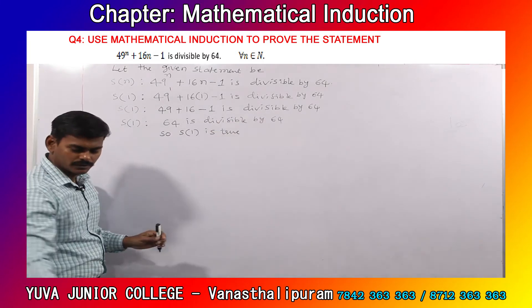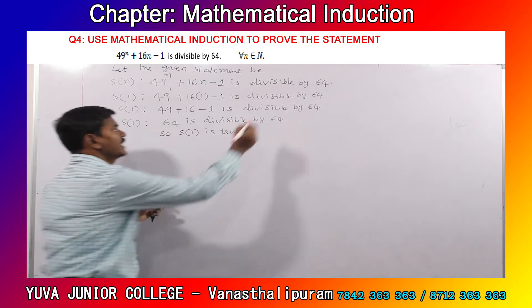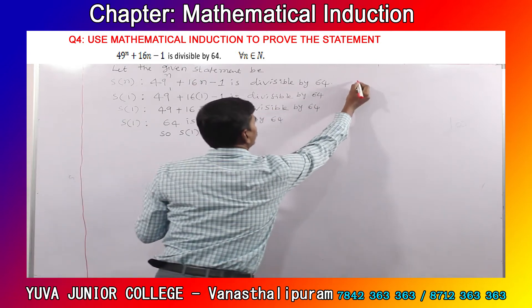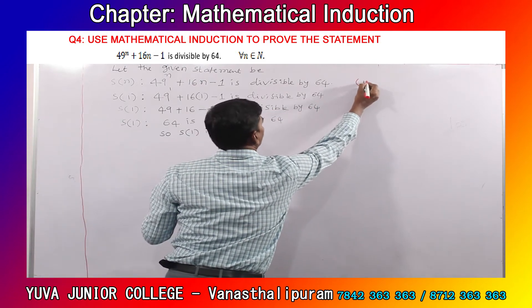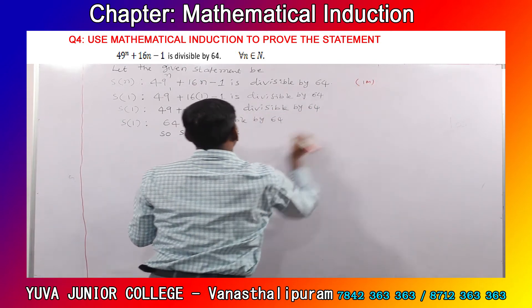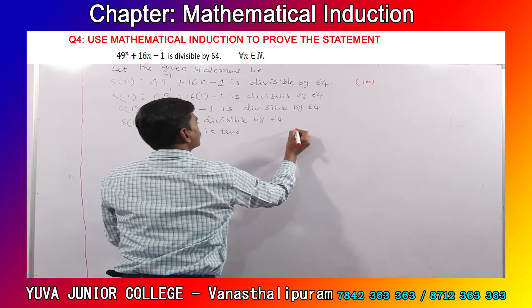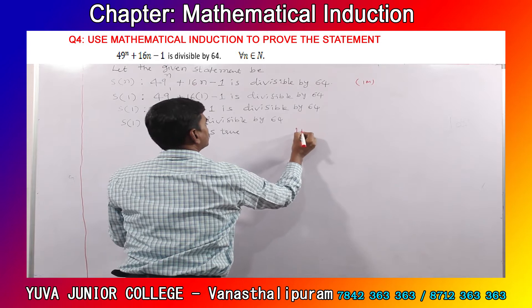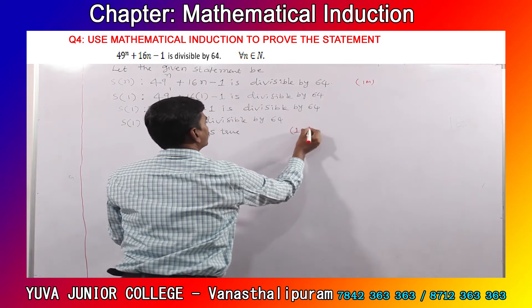So S of 1 is true. If you write this, you are going to get one mark — the S of 1 part gives you one mark.